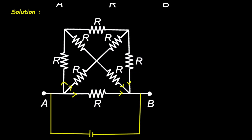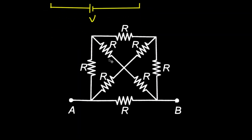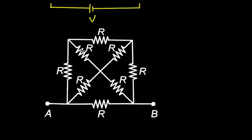So therefore, at this node, we can remove this node from here. And we can separate these two resistances and these other two resistances. So let's separate them — then the circuit will look like this.